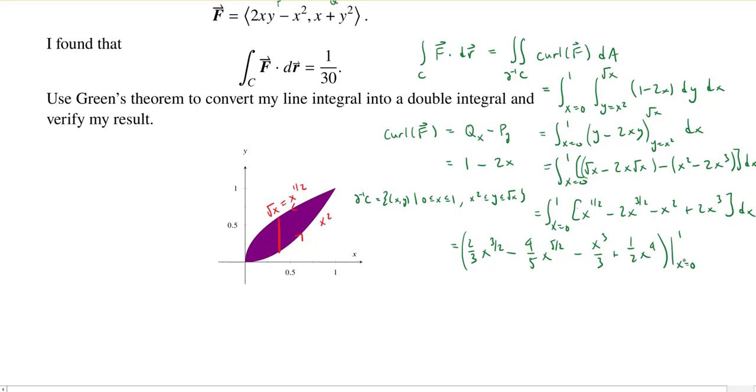Nicely at 0, everything's going to die, so we only care about it at 1. So we get 2 thirds minus 4 fifths minus 1 third plus 1 half. Let's do it because we actually know what the answer should be. So first, 2 thirds and 1 third, that makes 1 third. 1 third and 1 half is 5 sixths. So I have 5 sixths minus 4 fifths, which is 25 minus 24 is 1 over 30. We did get the right thing. Normally I would probably just leave it in this form, but since we actually were given a specific answer, let's verify that it actually works.